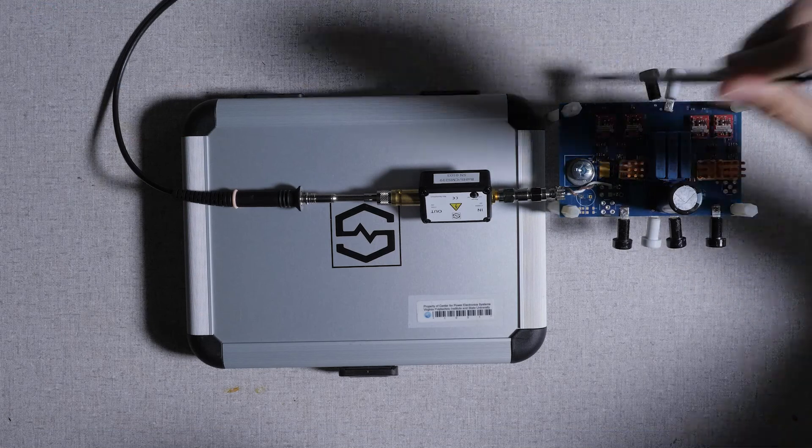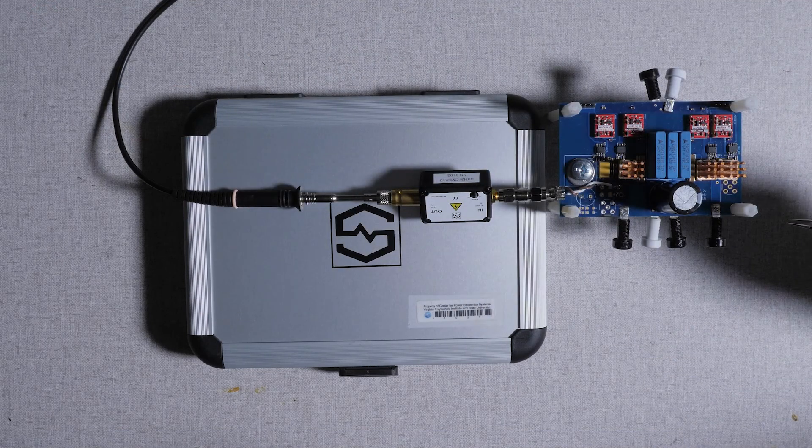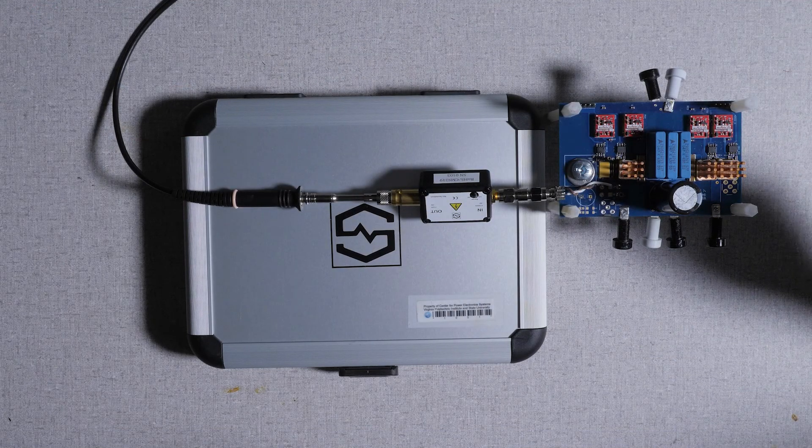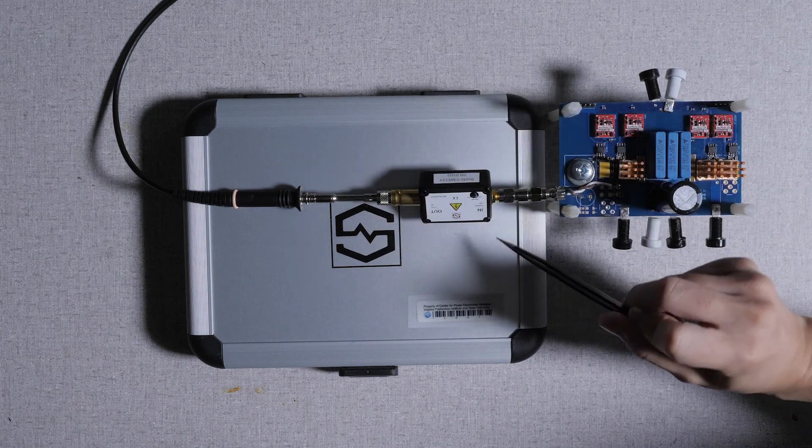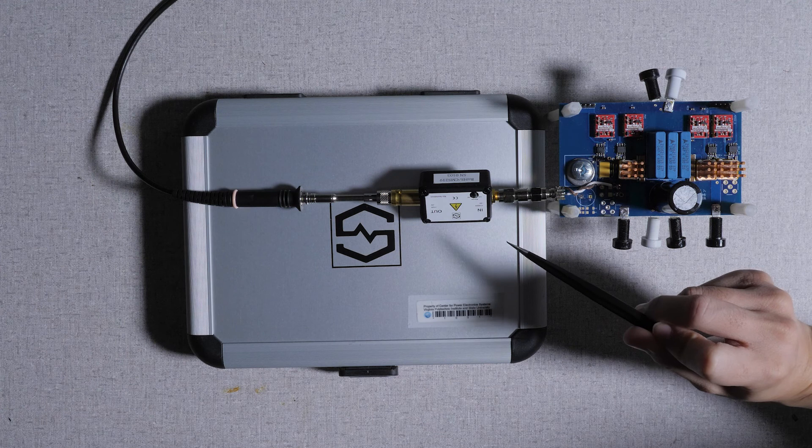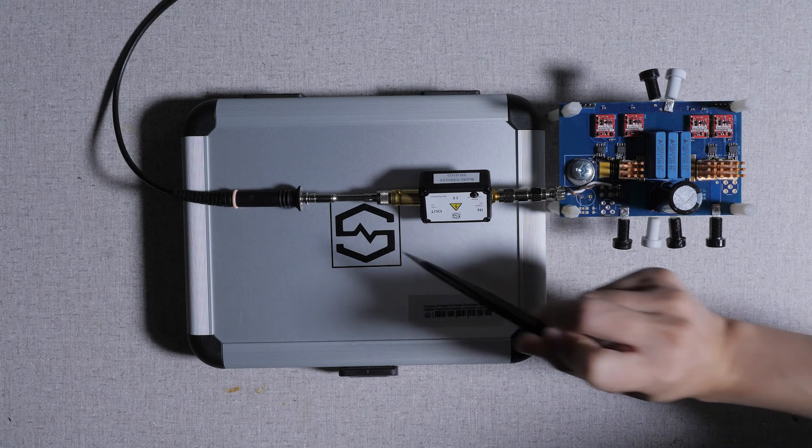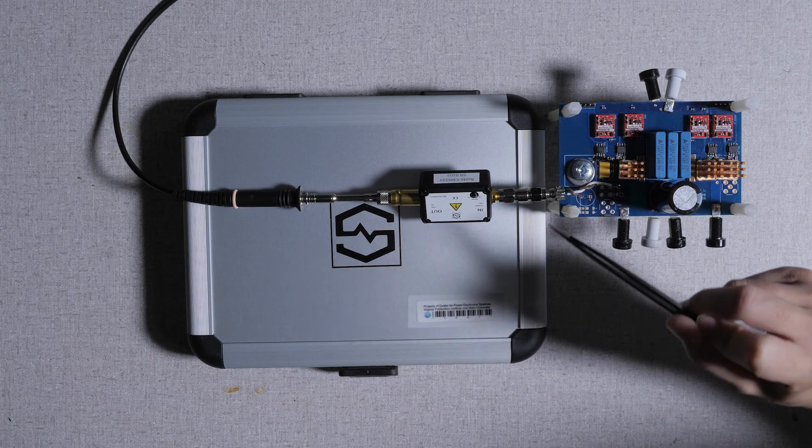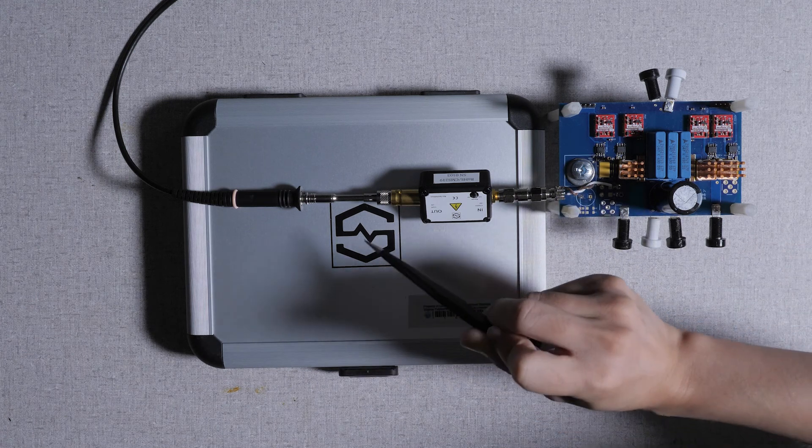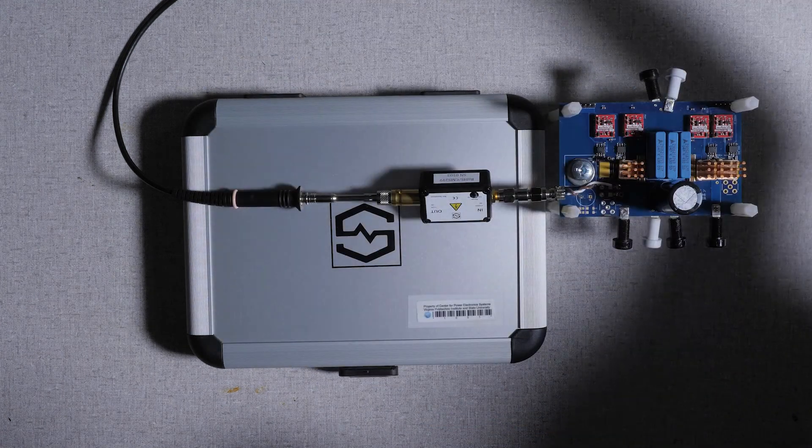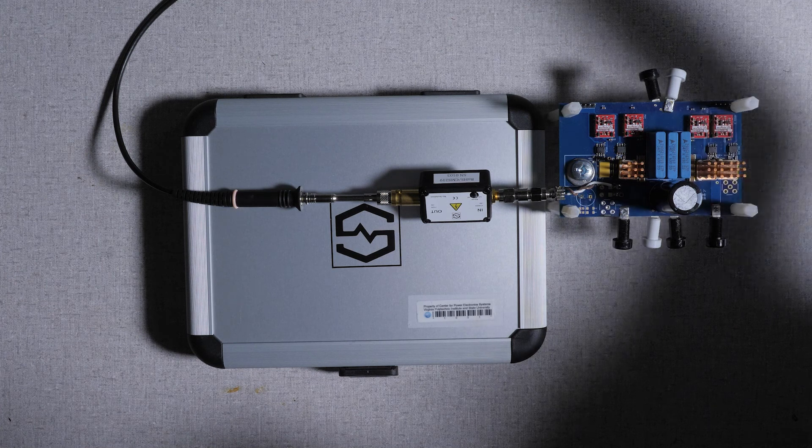This is the full-bridge board used for dynamic RDS(ON) characterization for both double-pulse and continuous test. This is the clipper measurement probe for VDS(ON) measurement. It has two terminals. This is the input side, which is connected to the drain and source terminals of the device under test. This is the output side, connected to the single-ended probe, then connected to the oscilloscope.